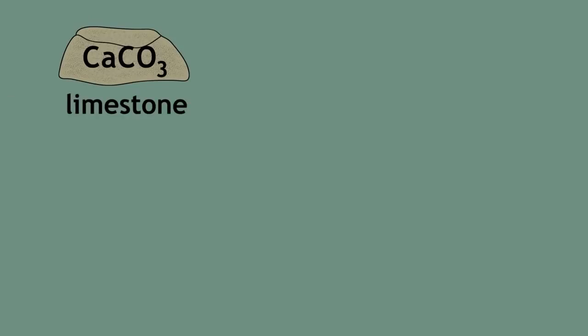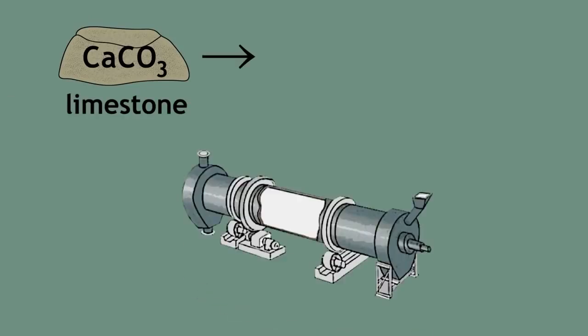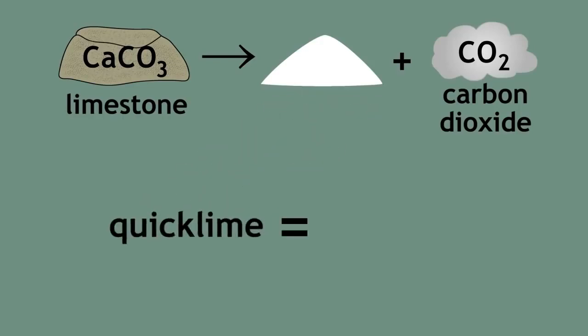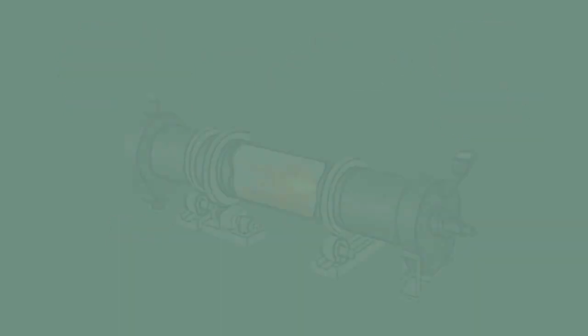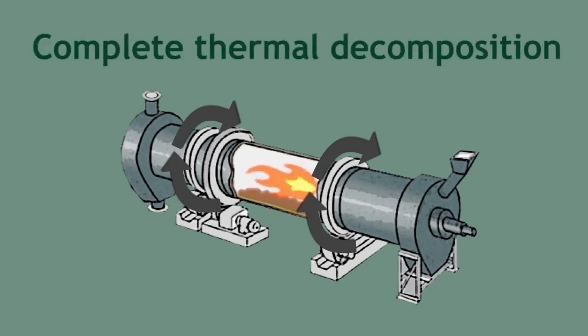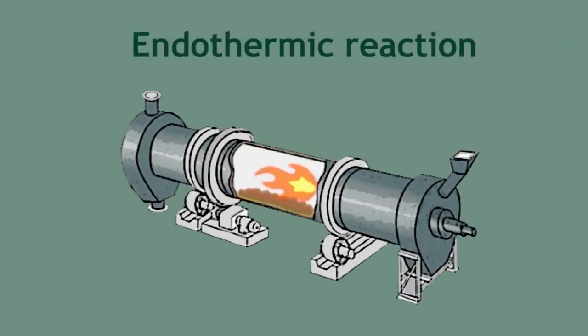Limestone can be thermally decomposed in a rotary kiln to give quicklime and carbon dioxide. The chemical name for quicklime is calcium oxide. A rotary kiln is a kiln that is able to rotate as the reaction proceeds. This helps to ensure complete thermal decomposition of the entire limestone sample. As this process requires heat, it is an endothermic reaction.